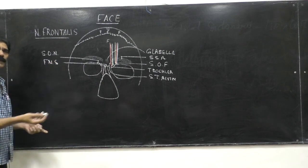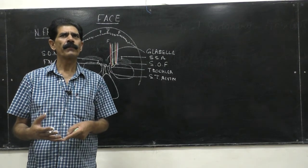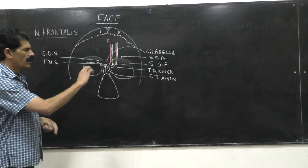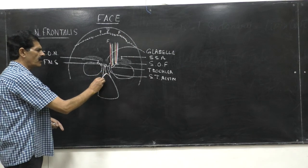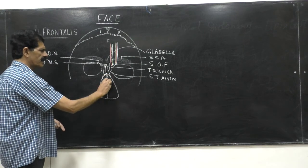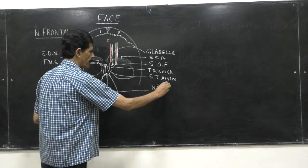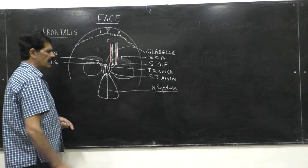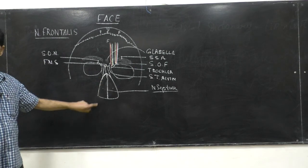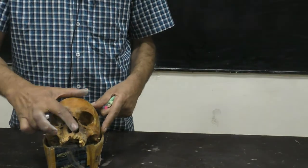The frontonasal suture is a sutural joint, like the coronal suture and sagittal suture we have already done. All the bones of the skull are flat bones having sutural joints. The lower part of the nasal bones is attached to the nasal cavity. The nasal cavity is divided by the nasal septum, which forms the medial wall separating the right and left nasal cavities.